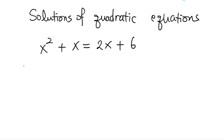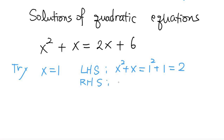So let's try, for example, this value x equals 1. Then the left-hand side is x squared plus x. If x equals 1, we have 1 squared plus 1, which is 2. And the right-hand side is 2x plus 6, and if you plug in 1, this is 2 times 1 plus 6, and that's 8. So these two values are not equal. So then x equals 1, this value 1, is not a solution.